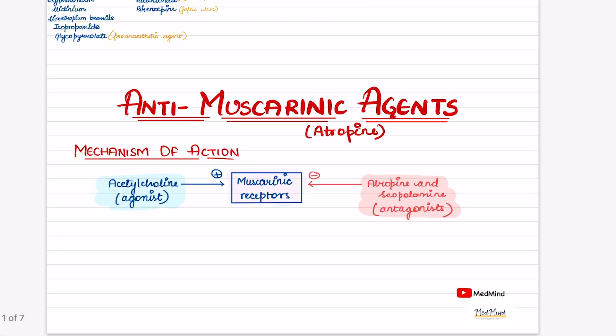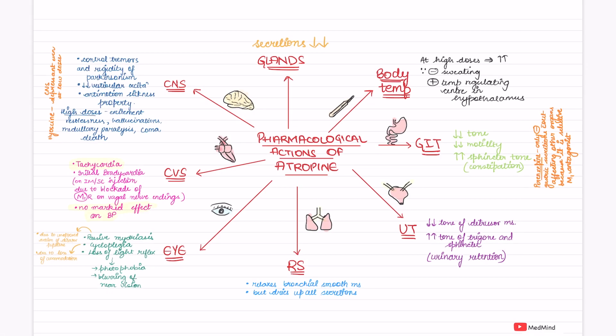Now coming to the mechanism of action of anti-muscarinic agents. If acetylcholine comes to muscarinic receptors, it will stimulate them. But if atropine and scopolamine come, they will inhibit those muscarinic receptors. Acetylcholine acts as an agonist and atropine and scopolamine act as antagonists.